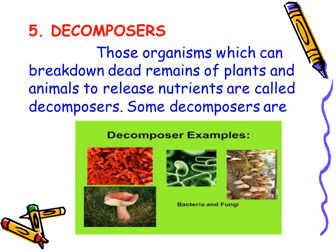The fifth and last type of consumers are decomposers. Those organisms which can break down dead remains of plants and animals to release nutrients are called decomposers. These are very important for our environment: firstly, because they clean up the environment by eating dead plants and animals; secondly, they break down complex nutrients into simpler nutrients in the soil so that plants can absorb and use these nutrients for their growth. Some decomposers are bacteria and fungi.